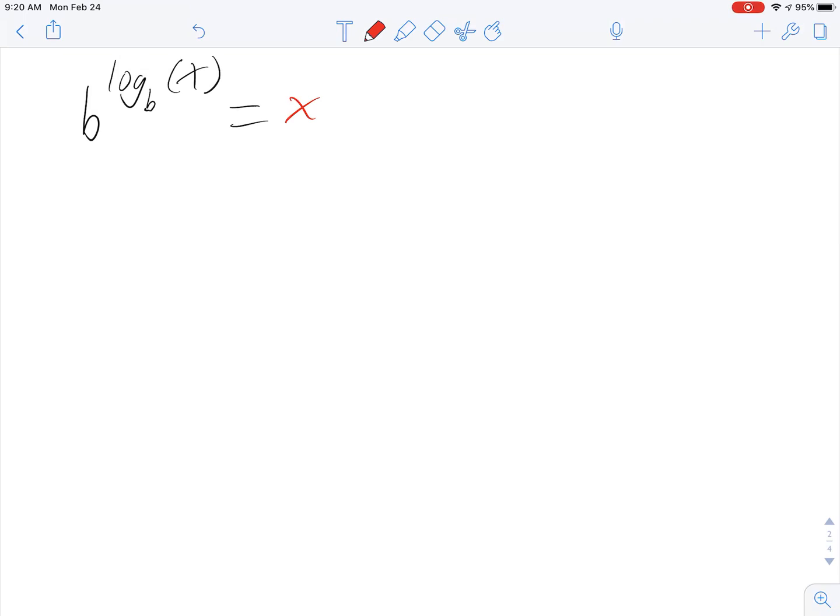So just as a quick example, if you had like 5 to the log base 5 of 17, notice the bases are both 5. They kind of cancel each other out—that's not really a fair thing to say, but effectively they do—and you just get 17.